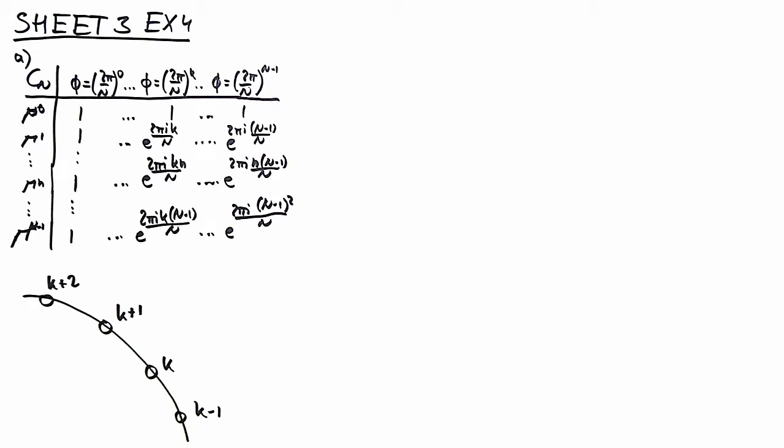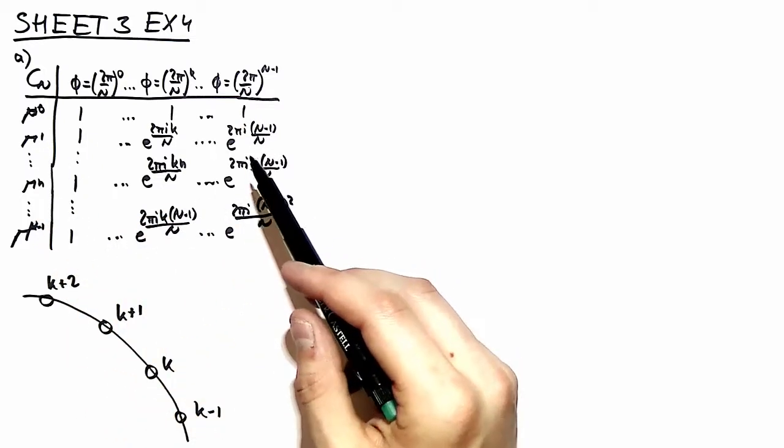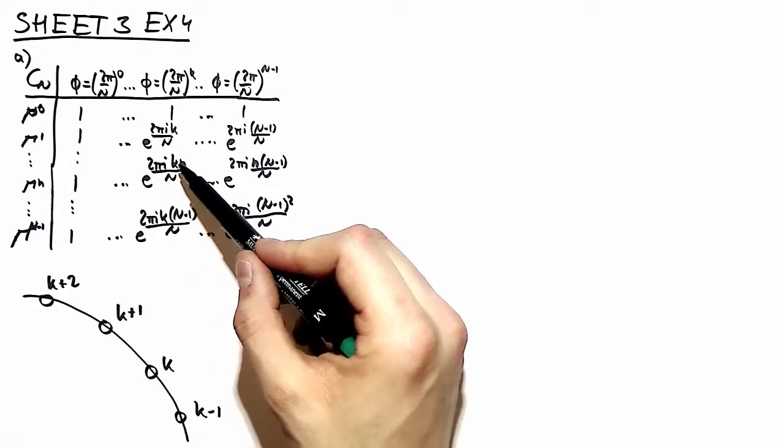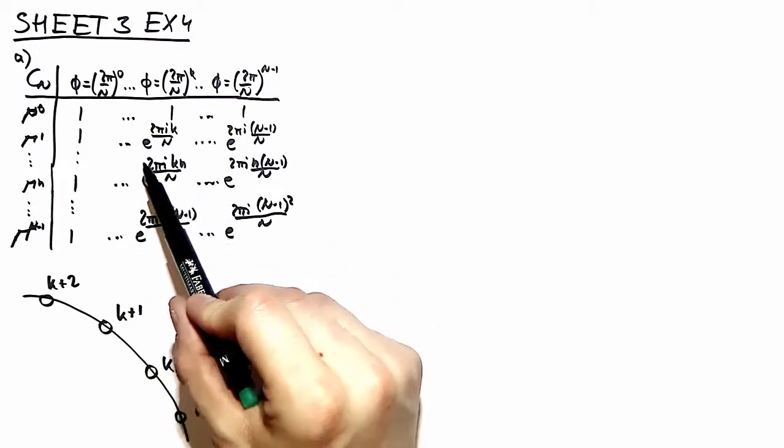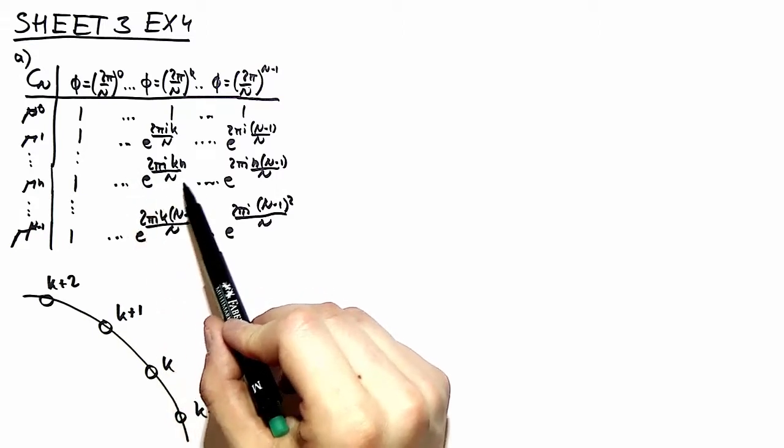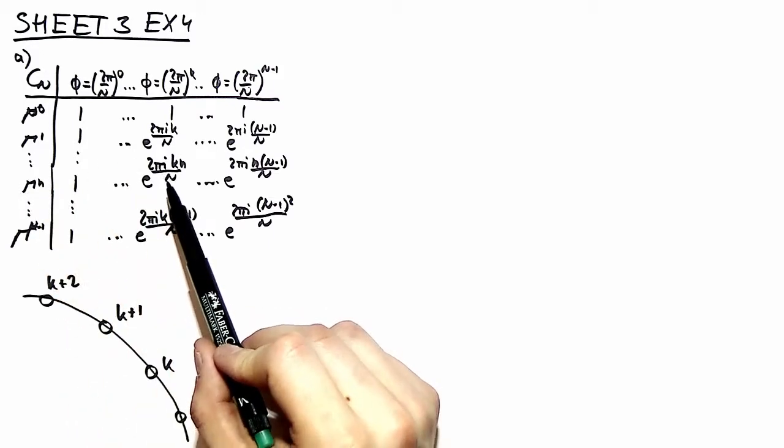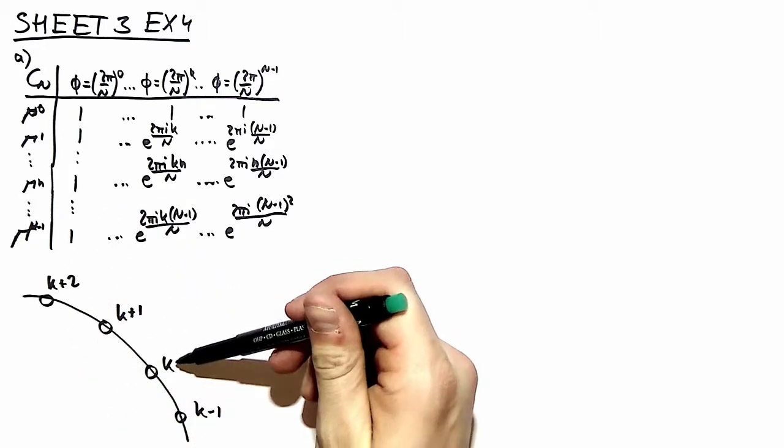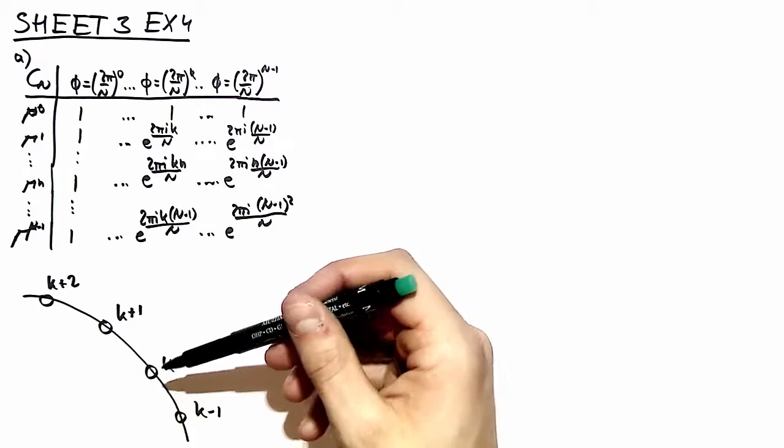The main result from that problem was this character table. I won't go into the details, you can watch the video. I will only explain the most important value right here. This value states that a vector acquires a phase when being transformed according to the nth representation which is proportional to the position of that vector. The vector must be in the tau representation of course.